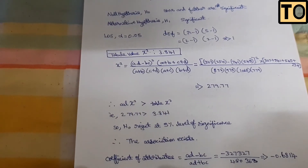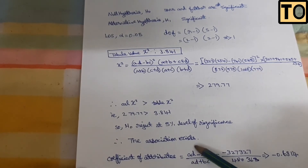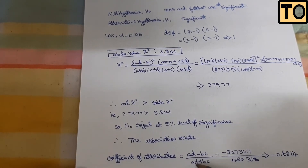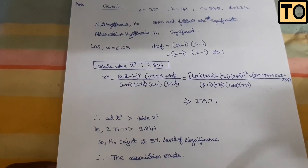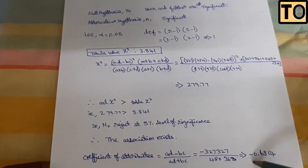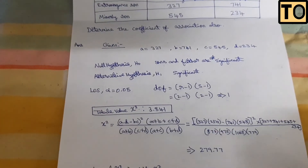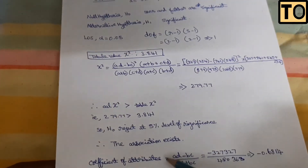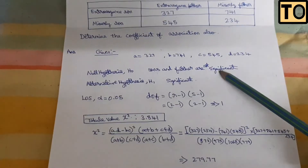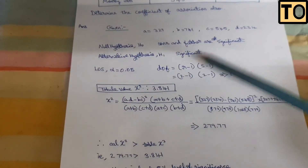Now for the coefficient of association: the formula is (ad - bc) divided by (ad + bc). Substitute the a, b, c, d values. The final answer for the coefficient of association is -0.6814.